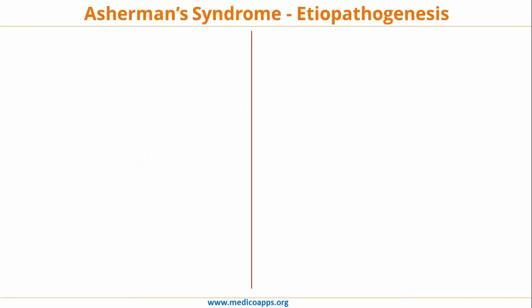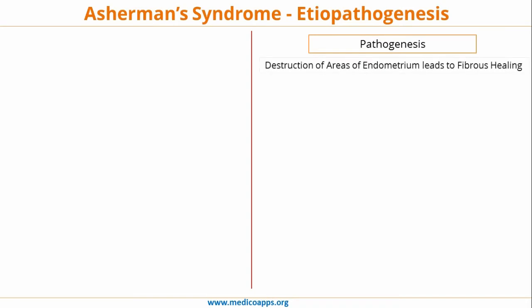Moving towards the pathogenesis of Asherman's syndrome: there is destruction of large areas of endometrium, which leads to fibrous healing. Histopathologically, Asherman's syndrome shows bands of fibrous tissue along with endometrium and myometrium involvement.